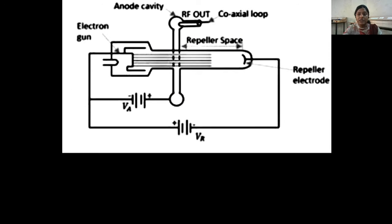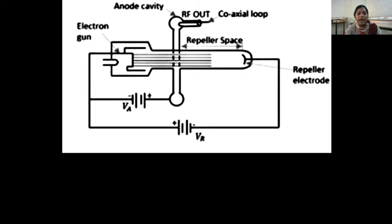Now we have to understand the constructional feature of Reflex Klystron. This diagram shows the constructional detail of Reflex Klystron. Here in this diagram we have an electron gun, which produces a beam of electrons. There is an anode cavity which is known as a buncher cavity or catcher cavity, because it has the property of both, as this is a single cavity used in Reflex Klystron. There is a repeller electrode which is at negative potential, and the electron gun and anode cavity are at positive potential as shown in the figure. The space between the anode cavity and repeller electrode is the repeller space.